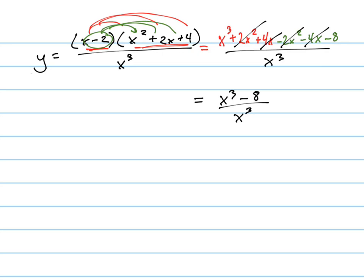And I can simplify that further by distributing x cubed into both terms on the top. And I get 1 minus 8 times x to the negative 3rd.